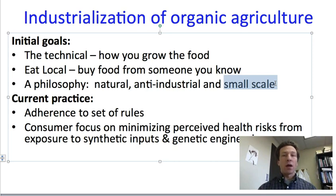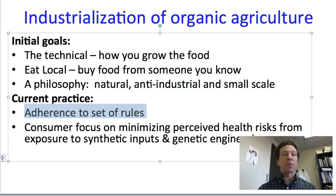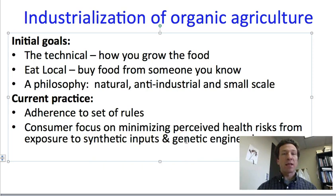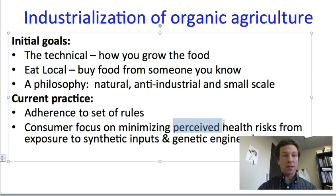This has evolved over time due to some pressures. Current practices are more focused on adhering to a set of rules — making sure that outlawed practices are avoided, but anything not against the rules is implicitly considered acceptable. The emphasis for marketing organic agriculture is selling consumers the idea that they can minimize perceived health risks from exposure to synthetic inputs and genetic engineering if they buy organic food. Notice I'm not actually saying organic is safer — this is much more perception than it necessarily is a reality, and whether it's a reality is contested and a matter of debate.